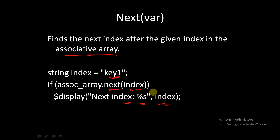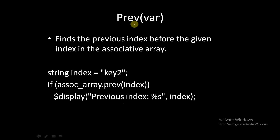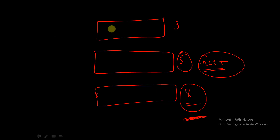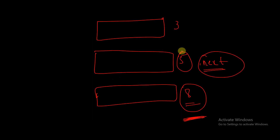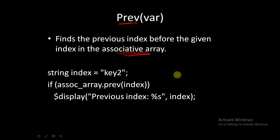Similar to the `.next` built-in function, we have `.previous`, which finds the previous index before the given index in the associative array. For example, if the current index is at the fifth position and memory locations are at 1, 5, and 8, the `.previous` function will return 1 — the third index before it.